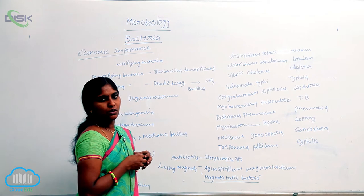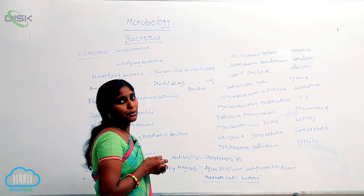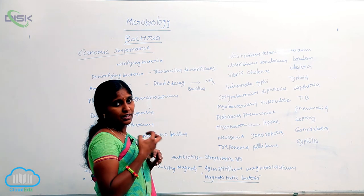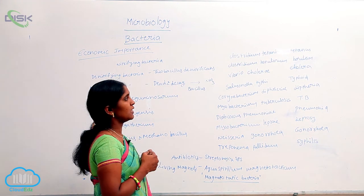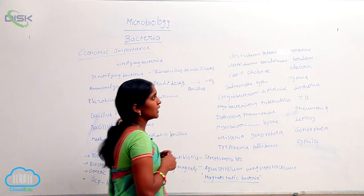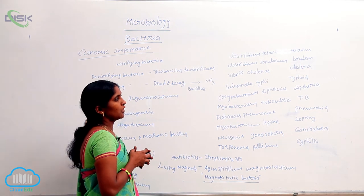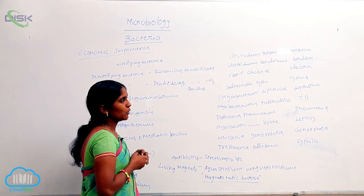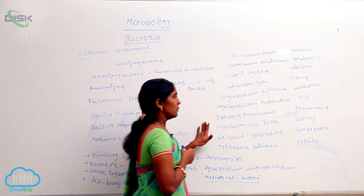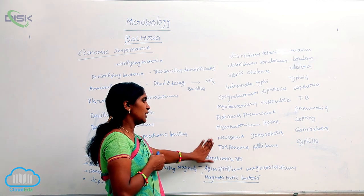Clostridium tetani causes tetanus. Clostridium botulinum causes food to become completely toxic, leading to the serious disease botulism when consumed by a living organism. Vibrio cholerae causes cholera. Salmonella typhi causes typhoid. Corynebacterium diphtheriae causes diphtheria. Mycobacterium tuberculosis causes tuberculosis. Diplococcus pneumoniae causes pneumonia. Mycobacterium leprae causes leprosy. And Treponema pallidum causes gonorrhea and syphilis.